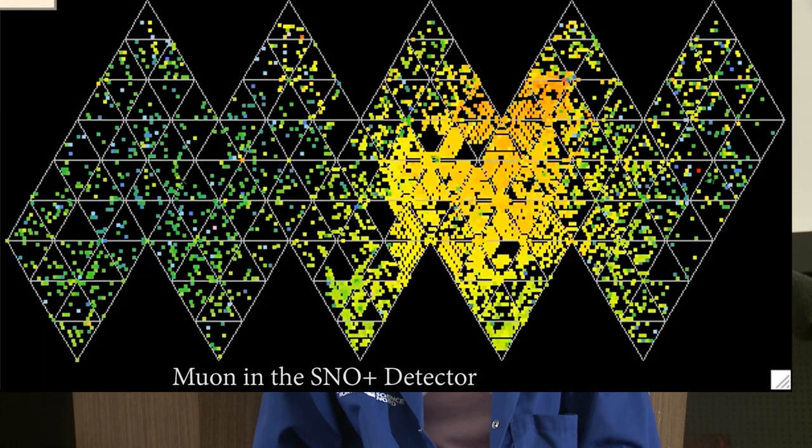Remember muons that show up as a long straight line in a cloud chamber? Well, we catch one around every hour, lighting up SNOWPLUS like a Christmas tree, even after two kilometers of rock shielding.